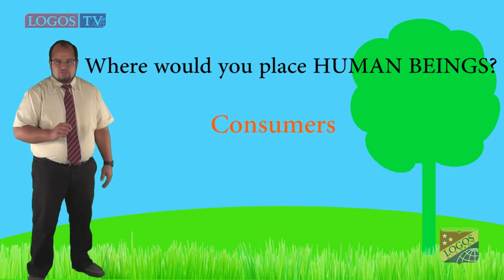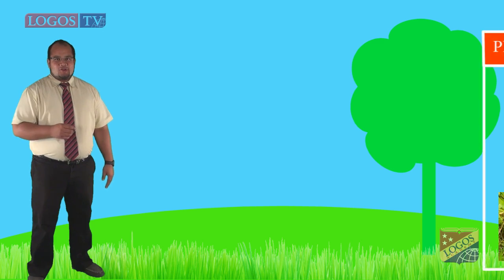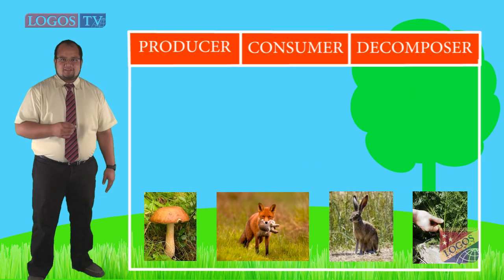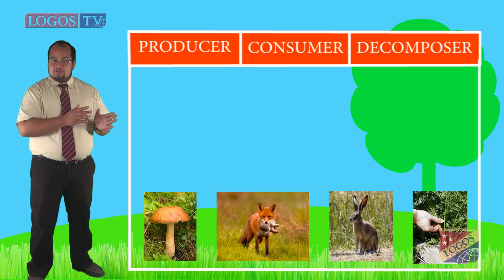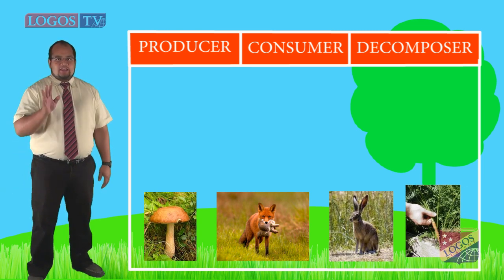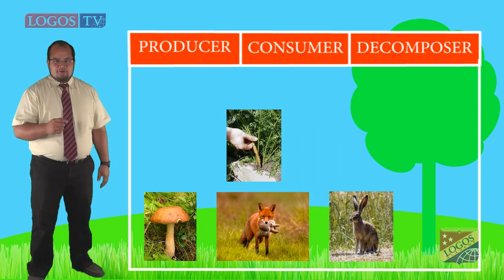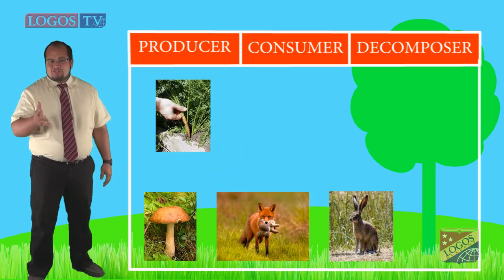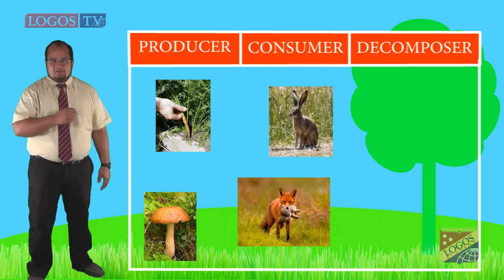Let's have a little practice. Look at the following pictures and classify them as producer, consumer, or decomposer. If you said that the plant is the producer, you are right. Are there any consumers? The rabbit and the fox are the consumers. What about the mushroom? You are right if you say it's a decomposer.